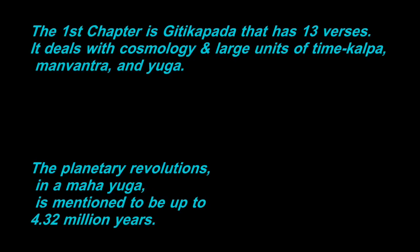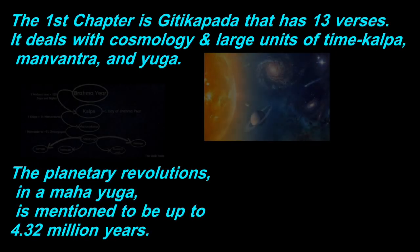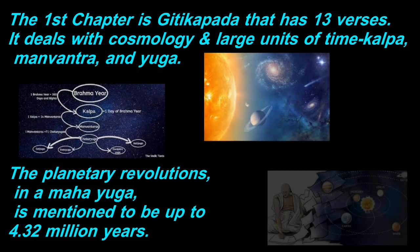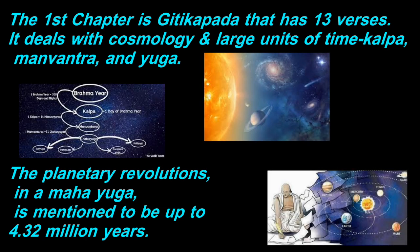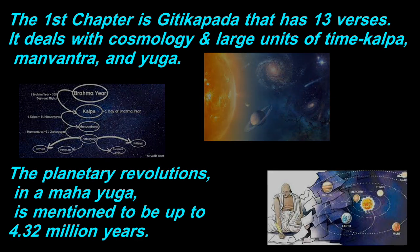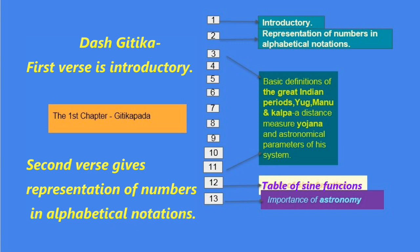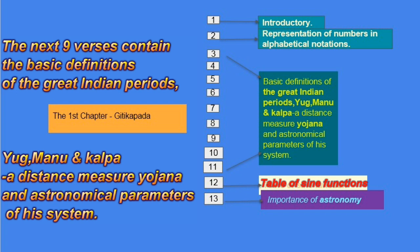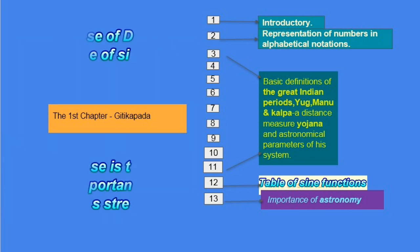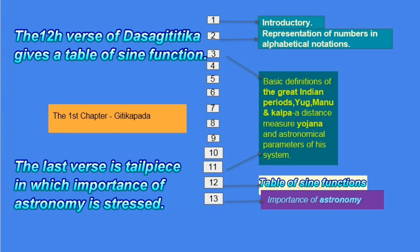The first chapter is Githika Pada that has 13 verses. It deals with cosmology and large units of time. Kalpa, Manvantara and Yuga. The planetary revolutions in a Mahayuga is mentioned to be up to 4.32 million years. Dasha Githika, first verse is introductory. Second verse gives representation of numbers in alphabetical notations. The next nine verses contain the basic definitions of the great Indian periods, Yuga, Manu and Kalpa. A distance measure of Yojana and astronomical parameters of his system. The tenth verse of Dasha Githika gives a table of sine function. The last verse is tailpiece in which importance of astronomy is stressed.